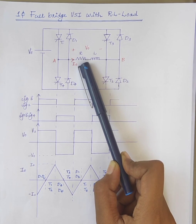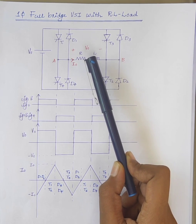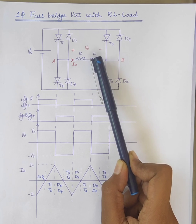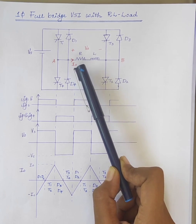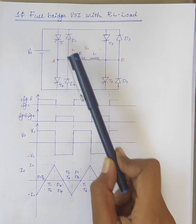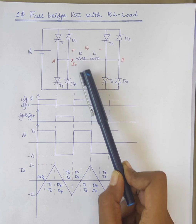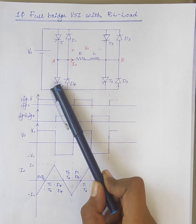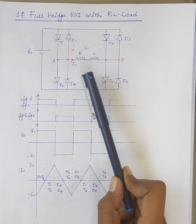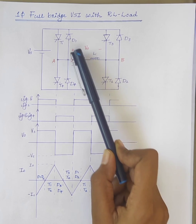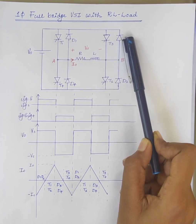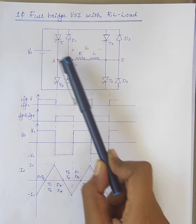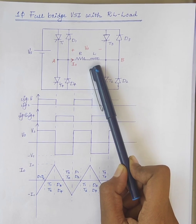The circuit diagram of single phase full bridge voltage source inverter is shown here. It consists of 4 SCRs — T1, T2, T3, T4 — 4 feedback diodes — D1, D2, D3, D4 — a voltage source and RL load.